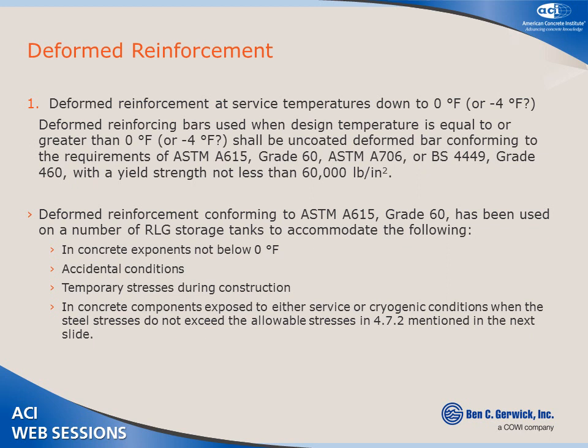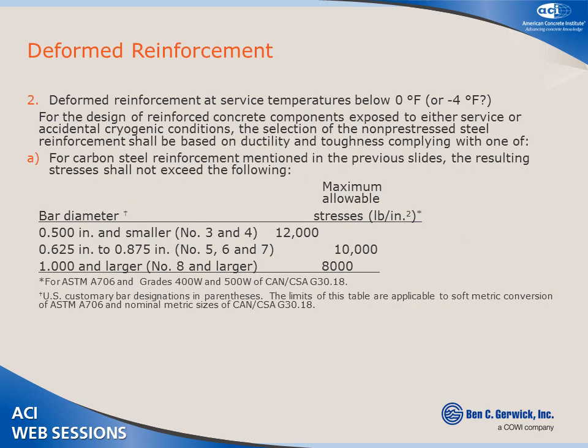Temporary stresses during construction are considered. Concrete components exposed to service or cryogenic temperature conditions do not exceed the limits described. Under service conditions, there is a limit for mild reinforcing steel of zero degrees Fahrenheit. There are three possible areas — A, B, and C — that can qualify the mild reinforcing steel. The first section for carbon steels is a stress limit, where you qualify your steel by limiting rebar stress to relatively low levels, ensuring ductile type performance is not required.